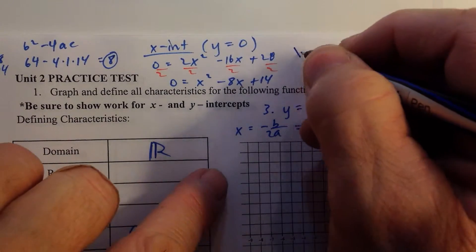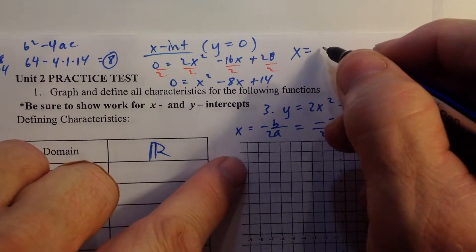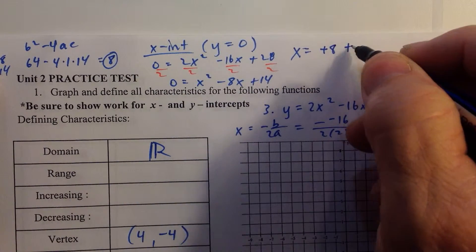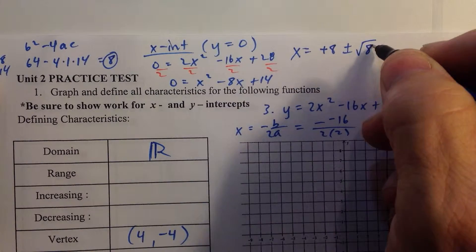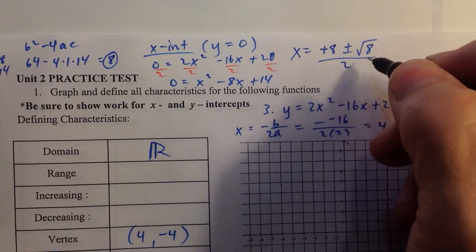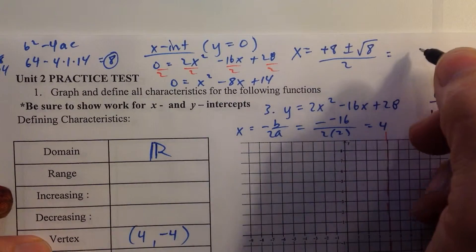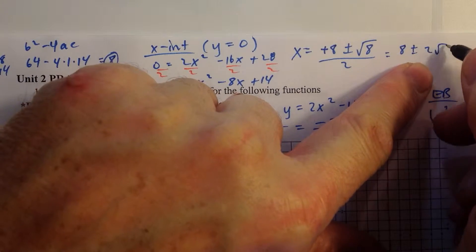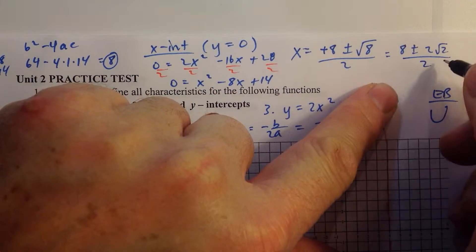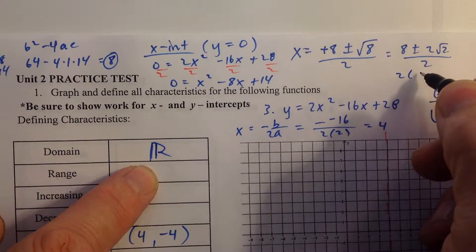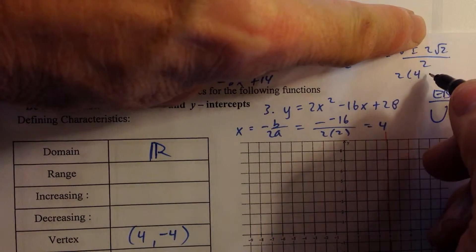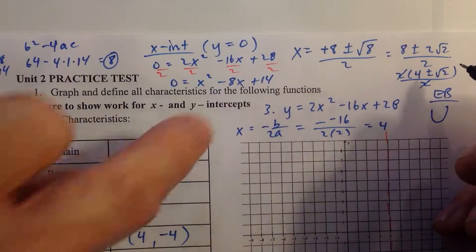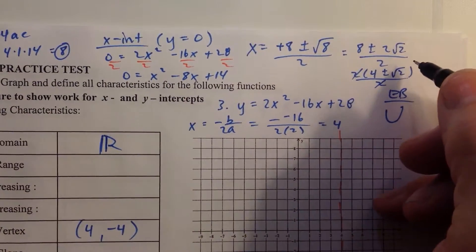And so x equals the opposite of b. If we look at b over here, b is equal to negative 8, so the opposite of negative 8 is positive 8, plus or minus the square root of 8, all over 2 times a, which is 2 times 1, which is 2. So we have 8 plus or minus, now if you remember, the square root of 8 is 2 radical 2, all over 2. If we factor out a 2 from the numerator, we get 4 plus or minus the square root of 2, all over 2. And the 2s cancel. So we get 4 plus or minus the square root of 2.